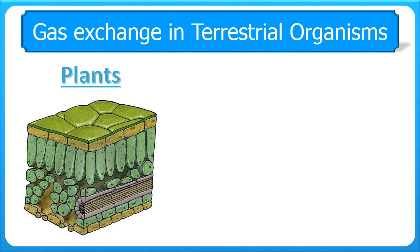Now looking at terrestrial organisms — firstly, plants. The main cells where gases are required are those in the leaves. Plants have a number of adaptations to facilitate gas transport and exchange with the environment. Like aquatic plants, the leaves are relatively thin, though not as thin generally. To get gases in, plants have structures mainly on the undersurface of their leaves called stomata, with two guard cells either side of a hole, which can open and close to allow gases to diffuse in.